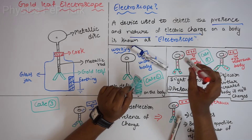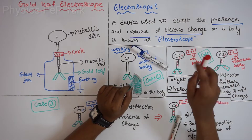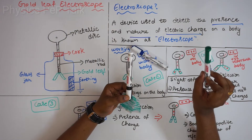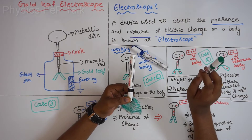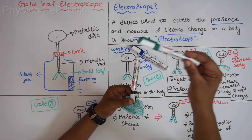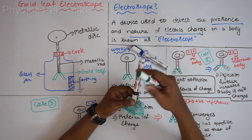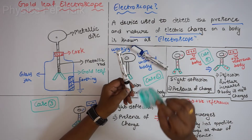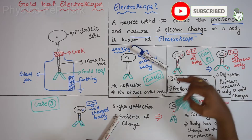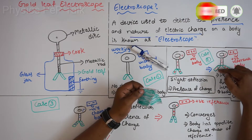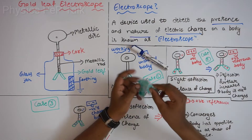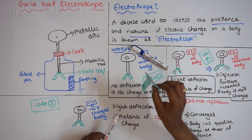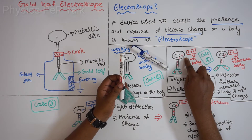To determine whether this body is positive or negative, we have to introduce a reference charge. I will bring a glass rod which is rubbed against silk cloth — we know that a glass rod attains positive charge when rubbed against silk cloth. Touching it causes electrons to transfer from this body to the glass rod. As a result this gets more positively charged, and the deflection further increases by a greater angle, which shows that the body given for testing is positively charged.